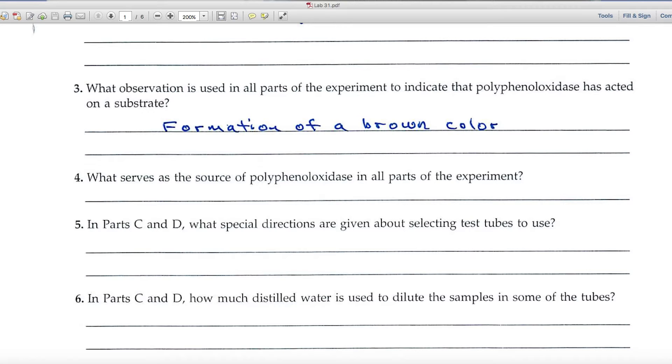And number three says, what observation is used in all parts of the experiment to indicate that polyphenyl oxidase has acted on a substrate? You'll look for the formation of a brown color.